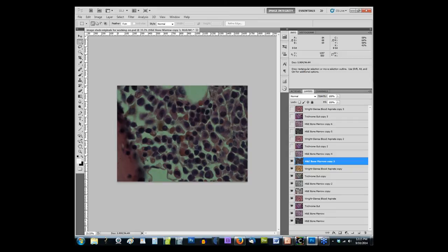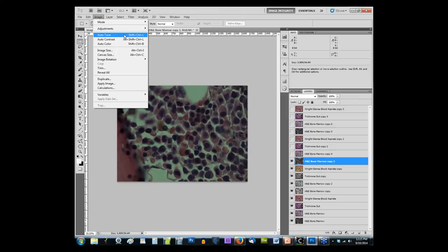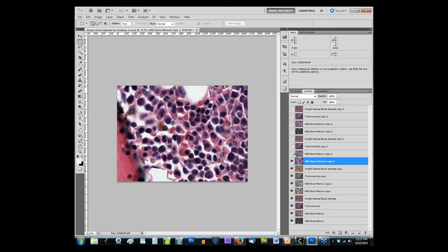Now what I'll do is use the auto levels or auto tone. So to use the auto tone under image I choose auto tone. Then I'll apply this to the same four images and then we'll look and see how this differs from auto color.